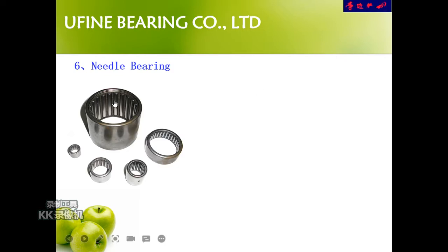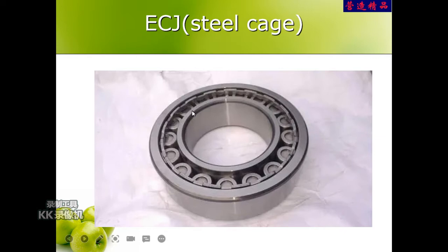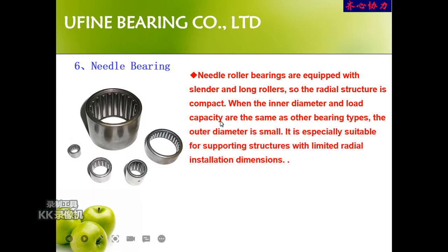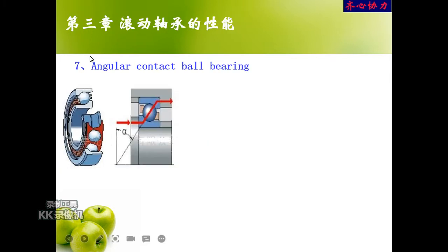Next is the needle bearing. As discussed, the roller here is just like a needle — thin, unlike the thick cylindrical roller. Needle roller bearings are equipped with slender, long rollers, so the radial structure is compact. With the same inner diameter and load capacity as other bearing types, the outside diameter is smaller. This makes them especially suitable for supporting structures with limited radial installation space. Many vehicles use this type of bearing.